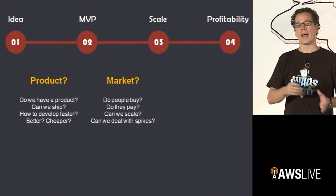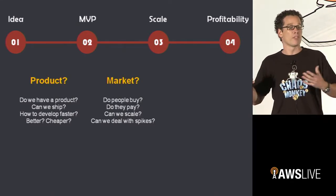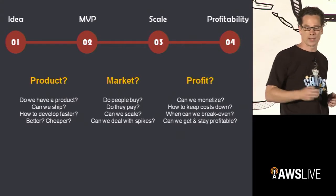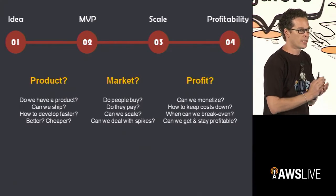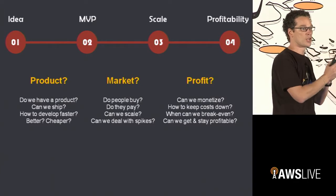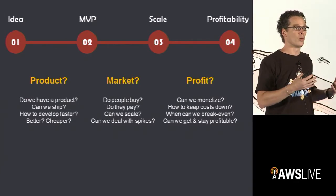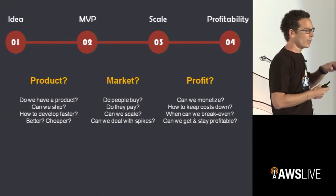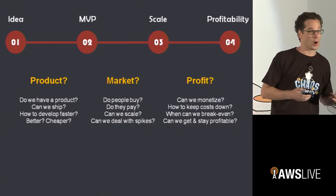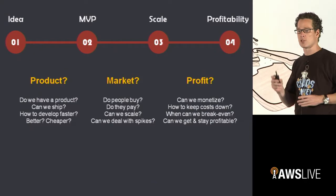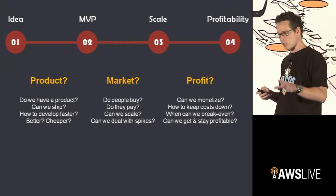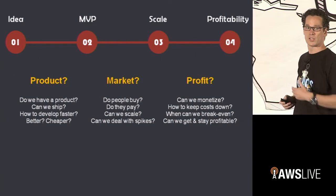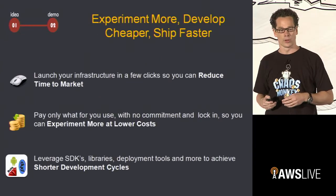As you get to scale, you want to build a viable business — you want to make money. It's all about profitability: can we monetize, can we continue to focus on our business and generate new revenue-generating opportunities, can we reduce cost? What we're going to do in this track is take you through each of those. I'll start with a quick summary of each of these three areas and how we help, and then the next sessions will focus more deeply on them.